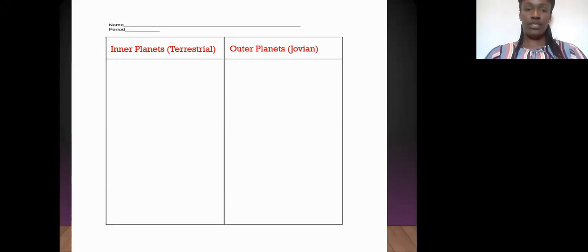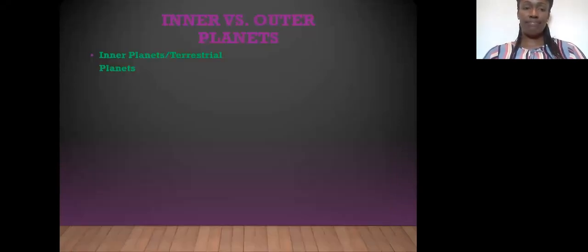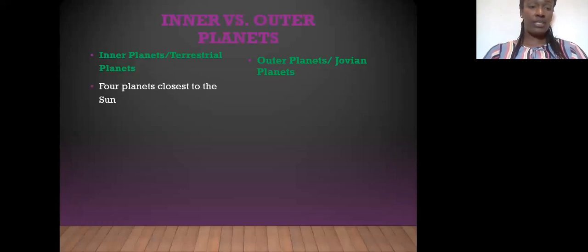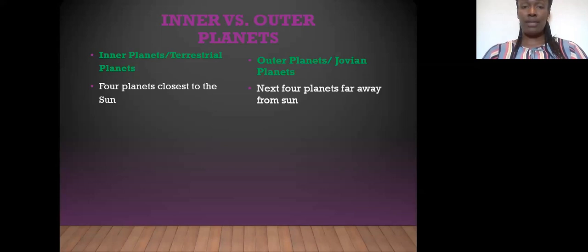Inner versus outer planets. The four planets closest to the Sun are the inner planets. The next four planets far away from the Sun are the outer planets. That's one difference. Another difference, the inner planets are smaller or small. The outer planets are large.